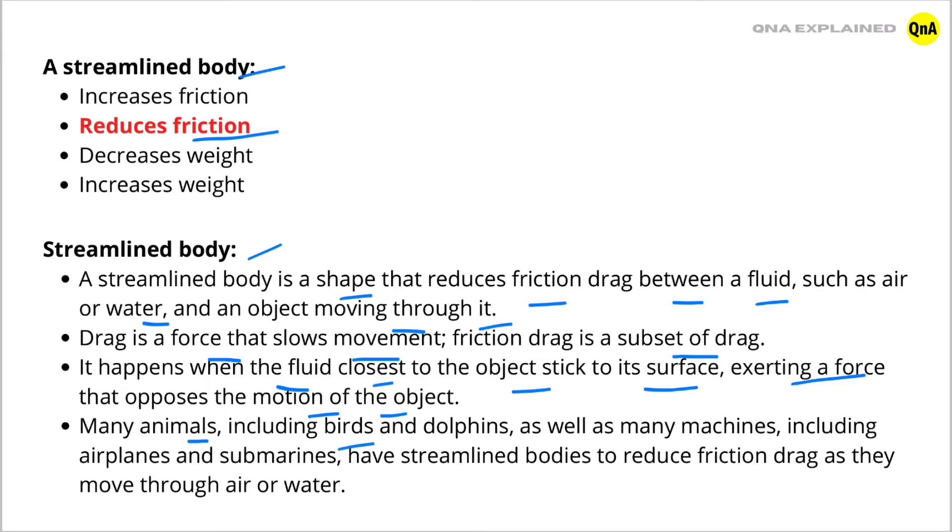Many animals, including birds and dolphins, as well as many machines, including aeroplanes and submarines, have streamlined bodies to reduce friction drag as they move through air or water.